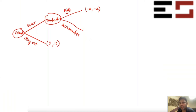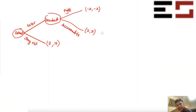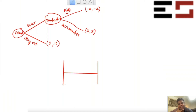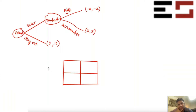If accommodation happens, they split 10 equally — so payoffs are 5 and 5. Now, can you tell me how many strategies player one (the entrant firm) has? Two strategies: enter and stay out. How many strategies does player two have? Two strategies: fight and accommodate.